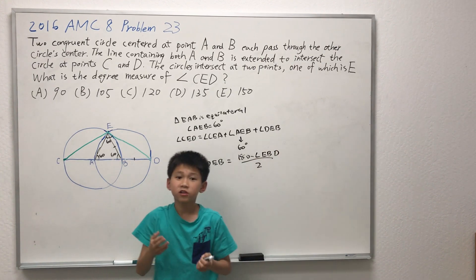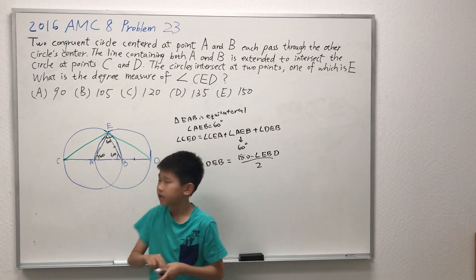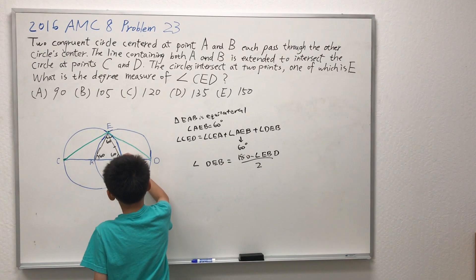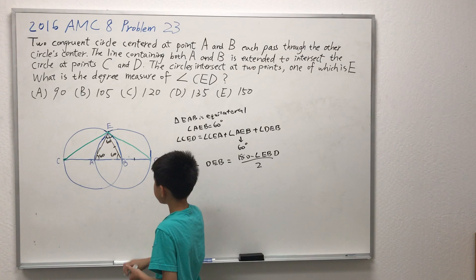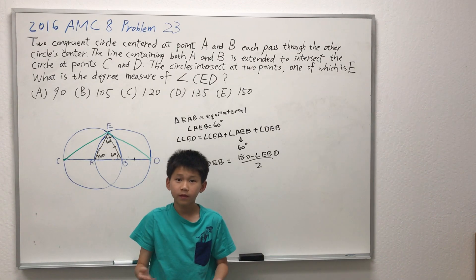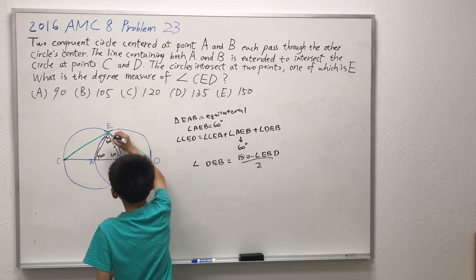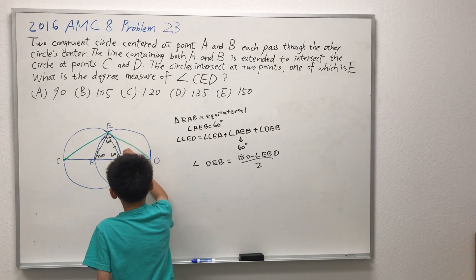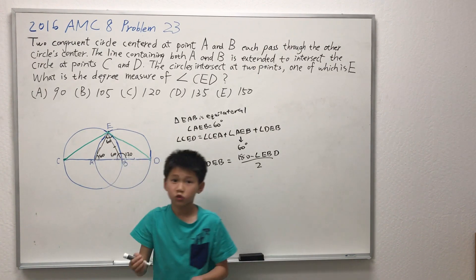And we can find angle EBD, because this whole line angle is 180. And since we already know a part of it, that means the angle EBD is just 180 minus 60, which is 120.